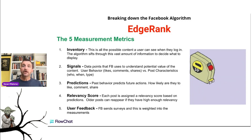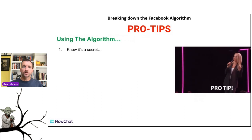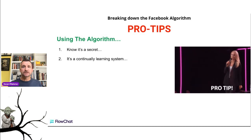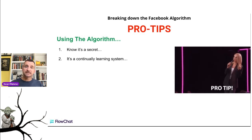That's why it's important to always stay on topic. Here are five pro tips that are going to be very powerful in using the algorithm. Number one: know it's a secret. Nobody truly knows what the algorithm says or does, but just know there are five main metrics it looks for and spits into the system — that's what comes out as the edge rank score. Secondly, it's a continually learning system. It's built on large language models — called LLMs in the AI world — and it will consistently improve, get better, and get more specific.